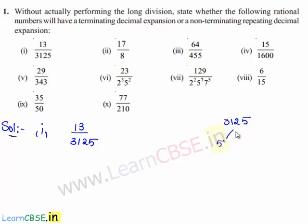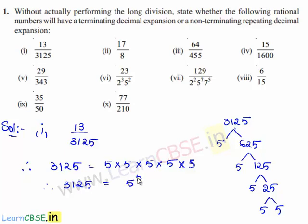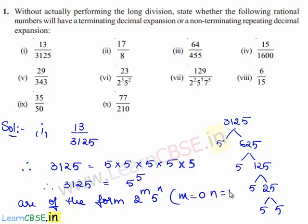3125 can be written as 5 times 625, and 625 can be written as 5 times 125. 125 can be written as 5 times 25, and 25 can be written as 5 times 5. Therefore, 3125 can be written as 5 power 5. Therefore, the factors of 3125 are of the form 2^m times 5^n, where m = 0 and n = 5 in this case.